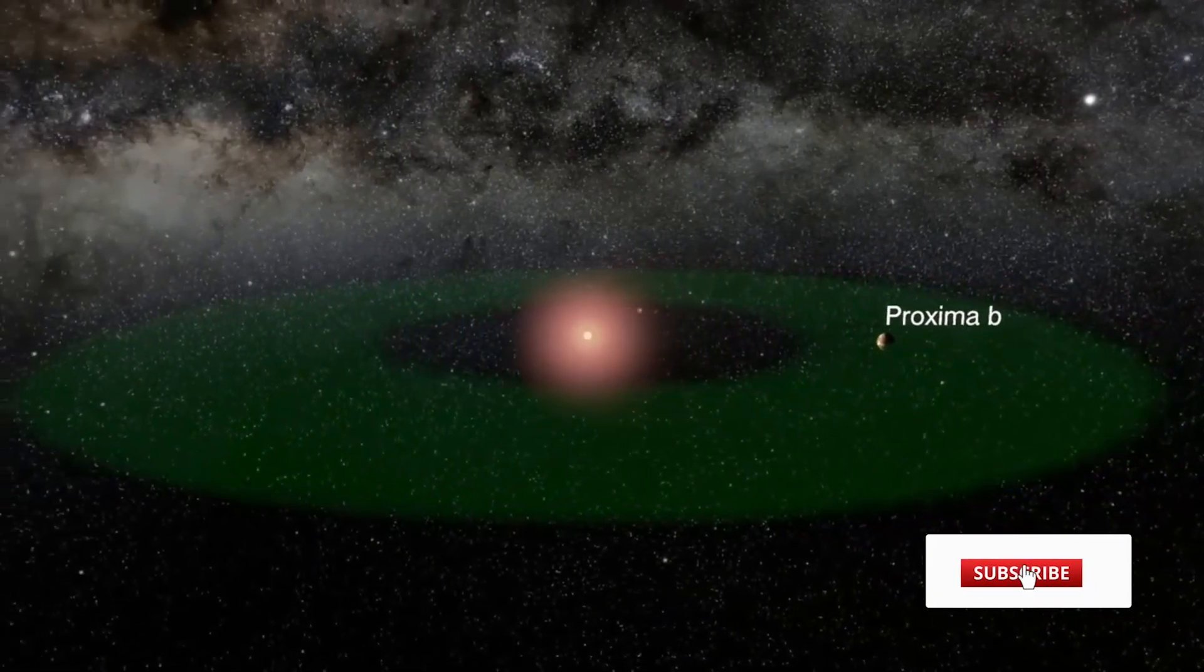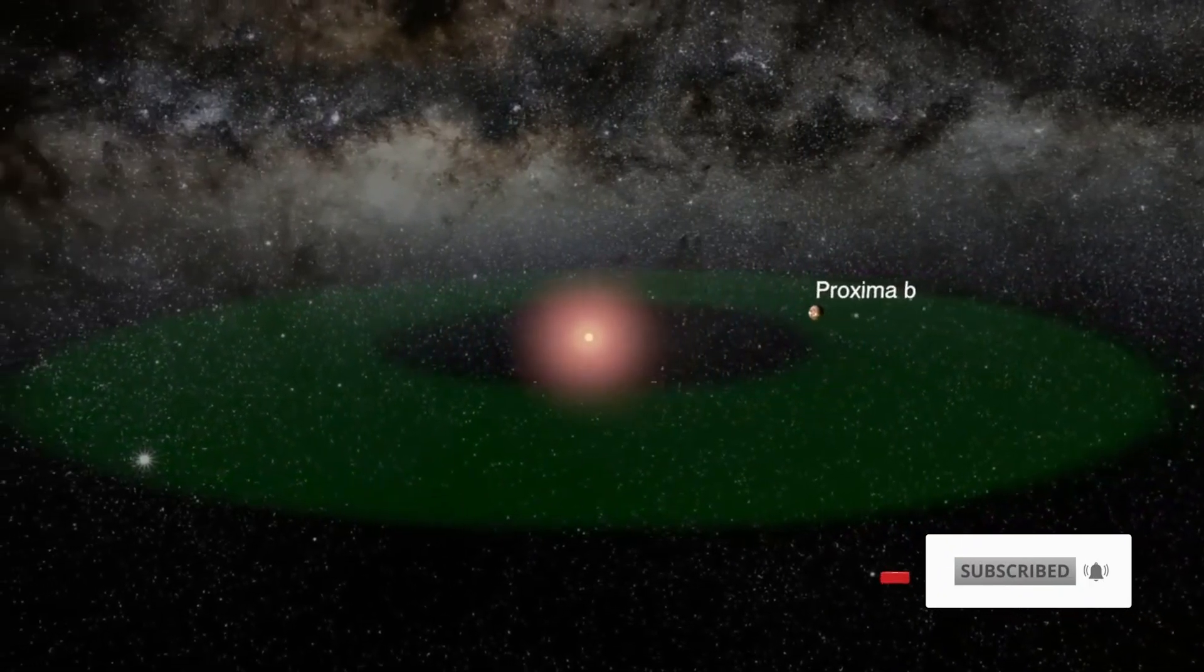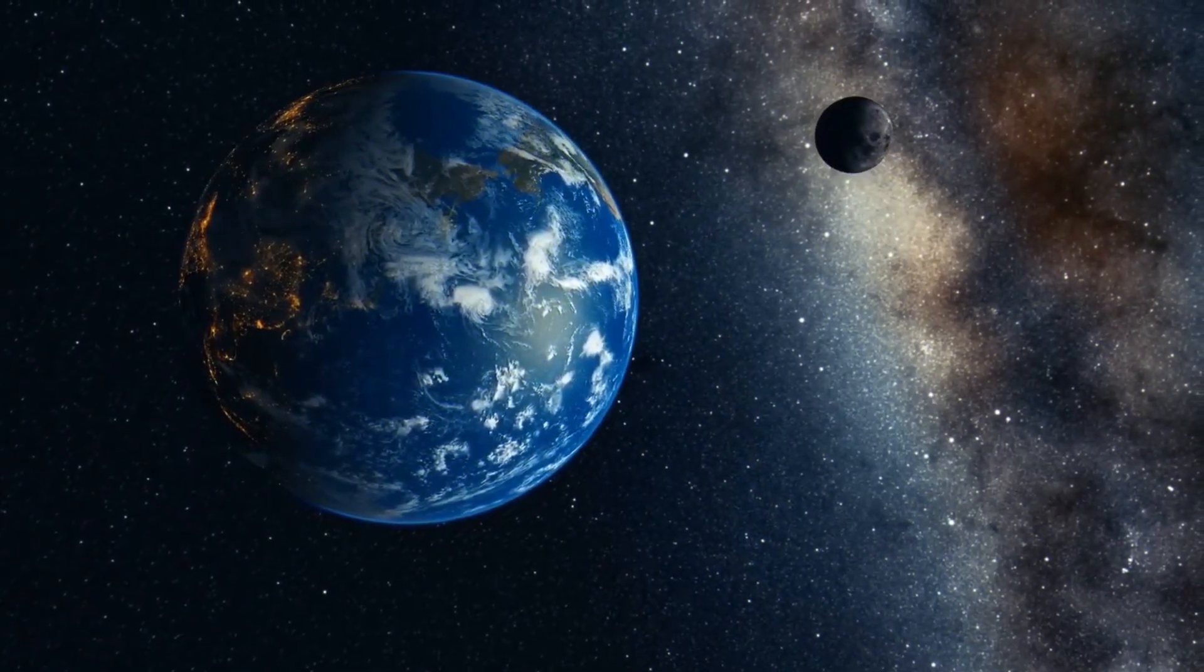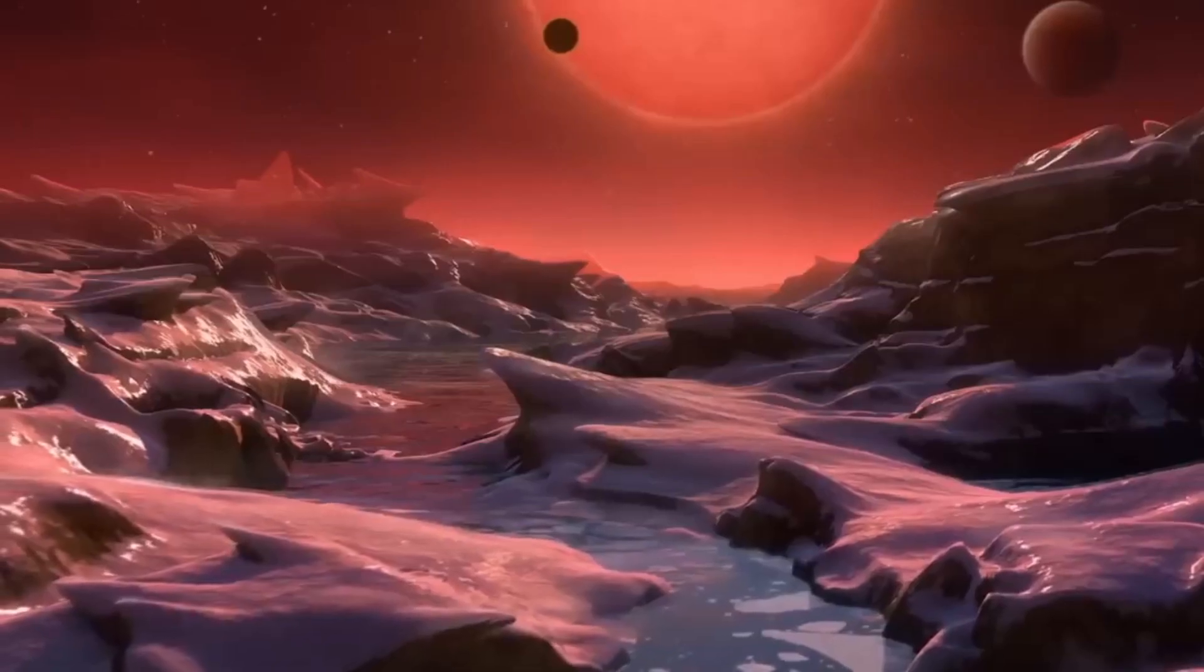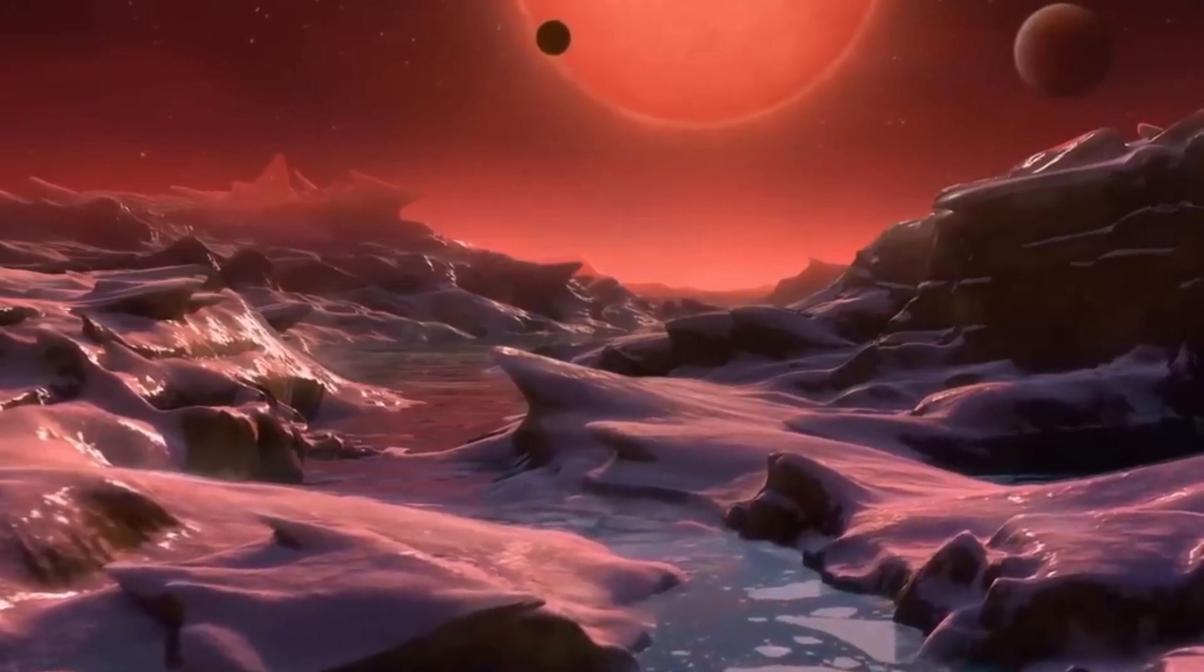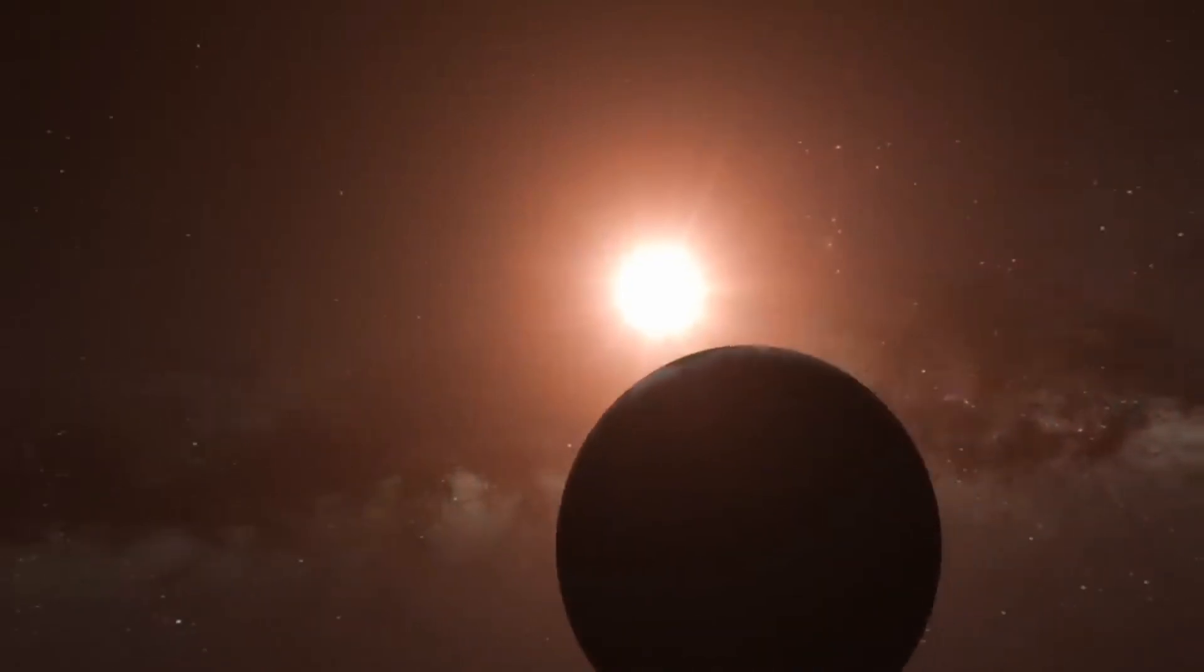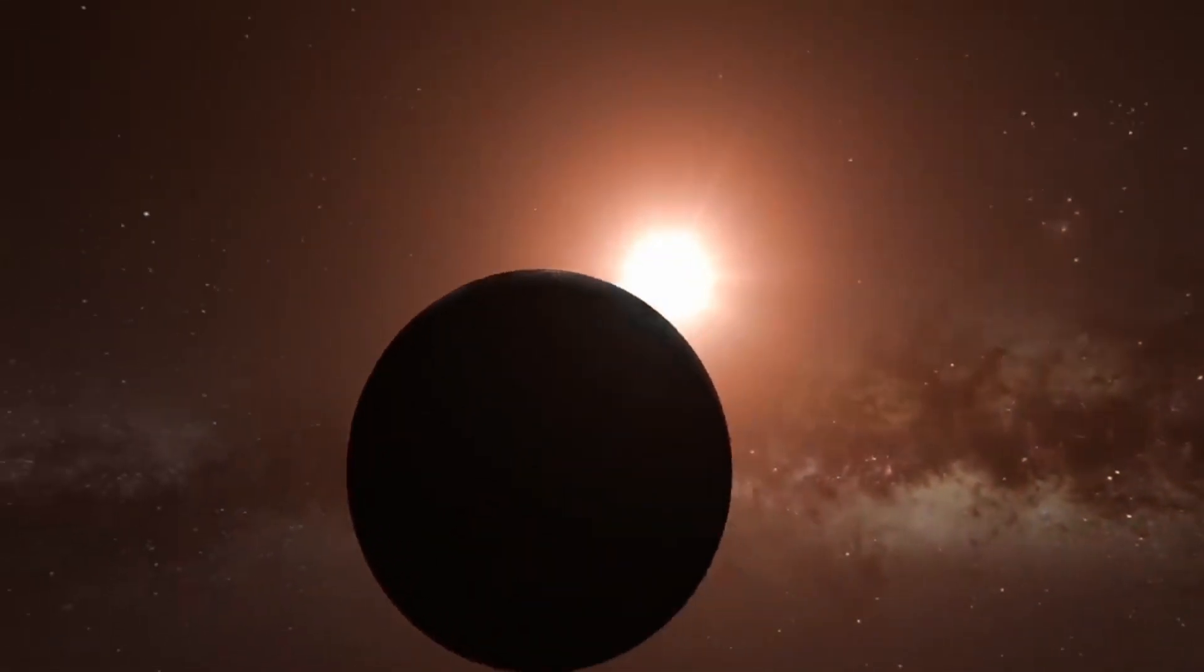This planet is tidally locked, that is, the same face of the planet always points to its star, as happens with the moon and the Earth. This means that the best area for life is the twilight zone. The surface temperature could be between minus 90 degrees and 30 degrees celsius. It takes about 11 Earth days to complete a full orbit to its star, and it has a gravity of about 1.3 times that of the Earth.